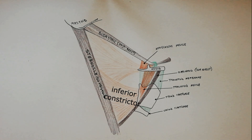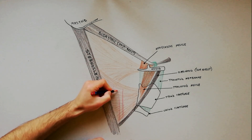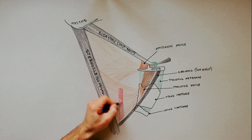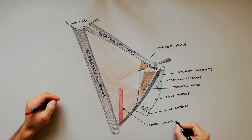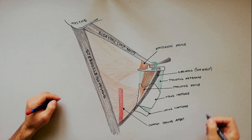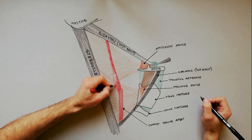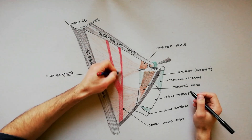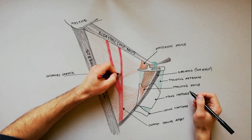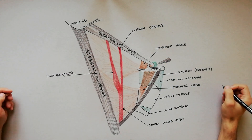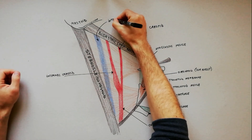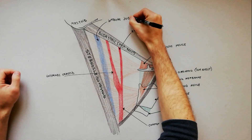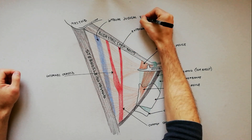The major contents of the carotid triangle are the common carotid artery, internal carotid artery, external carotid artery, internal jugular vein, and the last three cranial nerves.